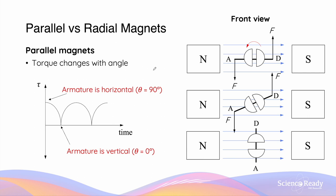The first type is through using a pair of parallel magnets. Parallel magnets will produce magnetic field lines that are parallel, and in this case they're running horizontally from the north pole of one magnet to the south pole of another.